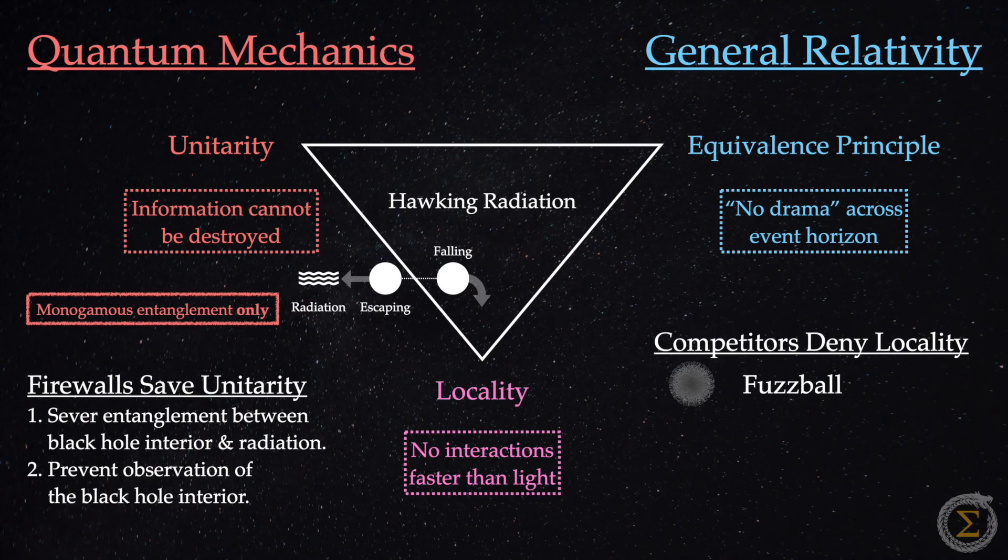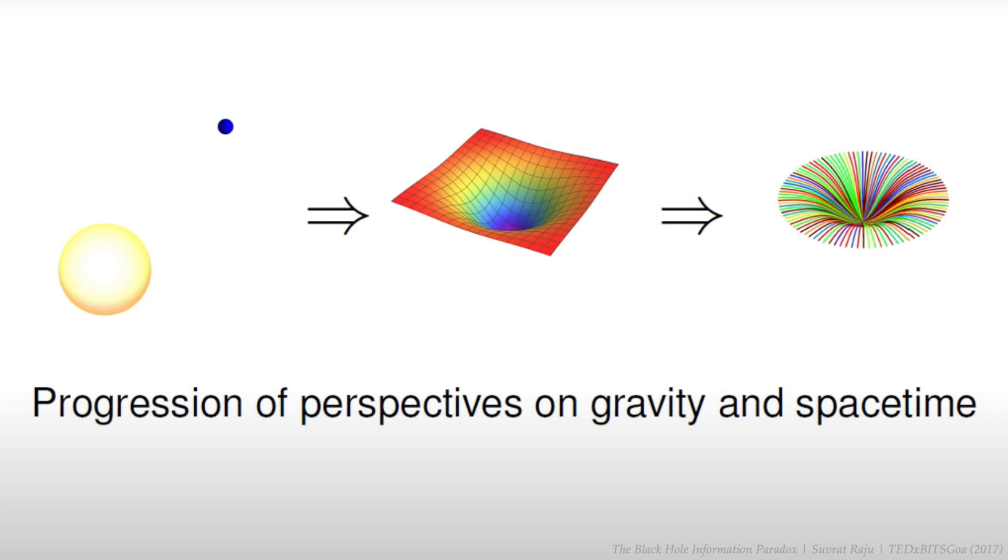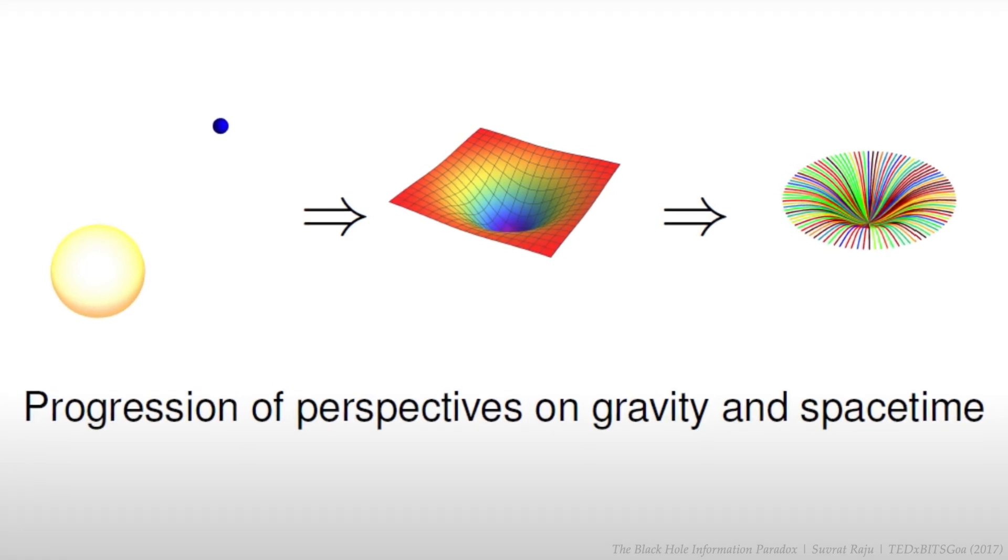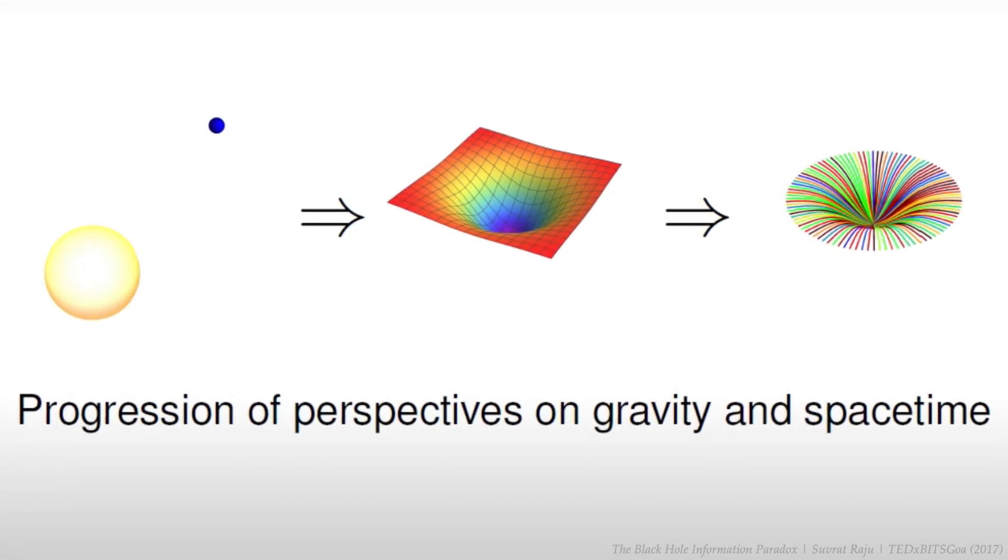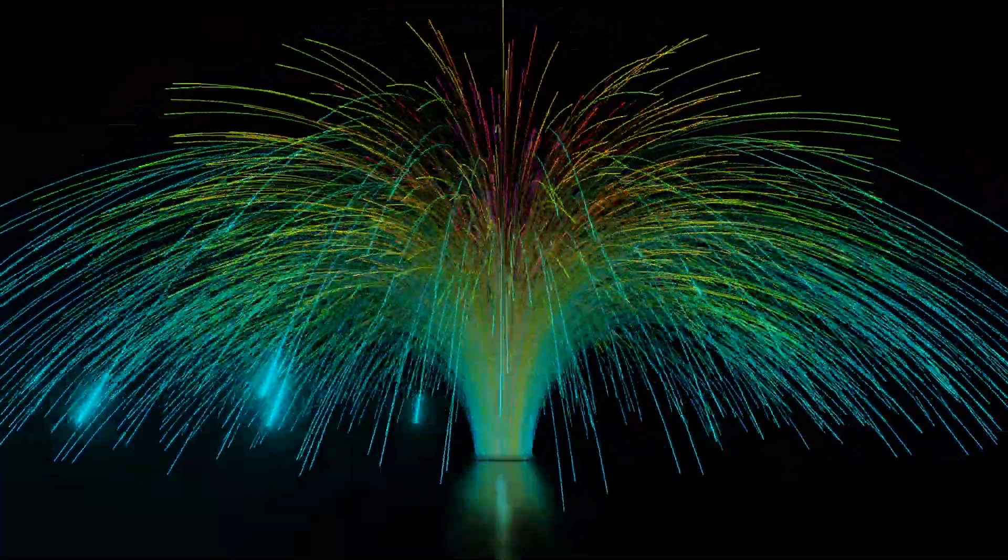Second, the Papadodimus Raju proposal posits that the interior of a black hole shares the same degrees of freedom as Hawking radiation. By identifying these two systems as fundamentally the same, it resolves the monogamy problem, but it challenges the independence of interior and exterior observers.